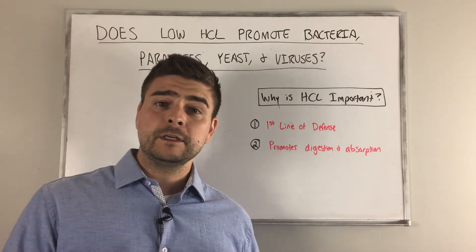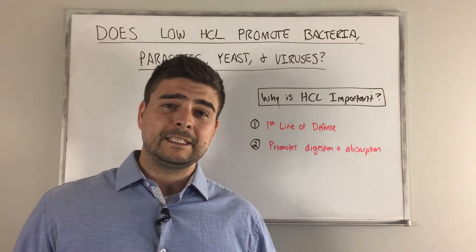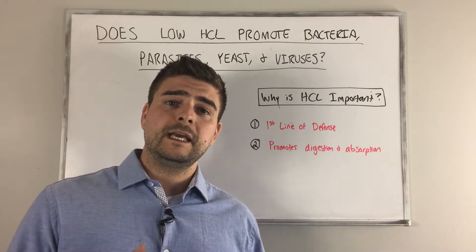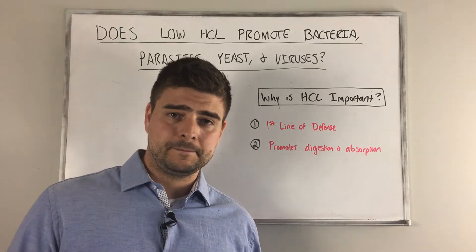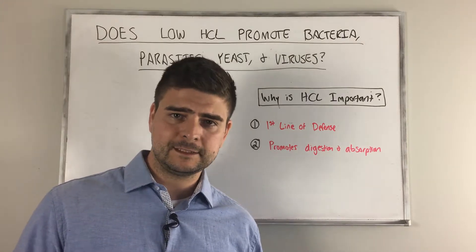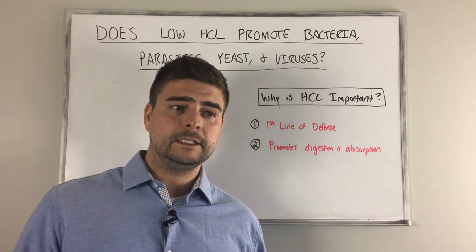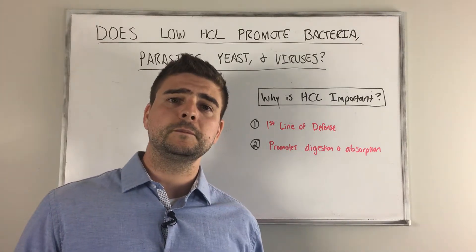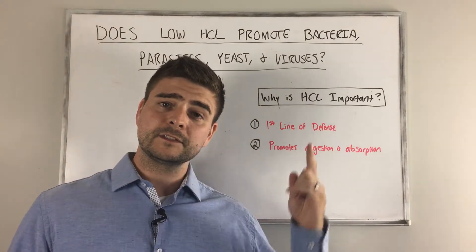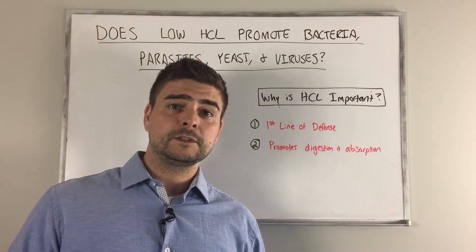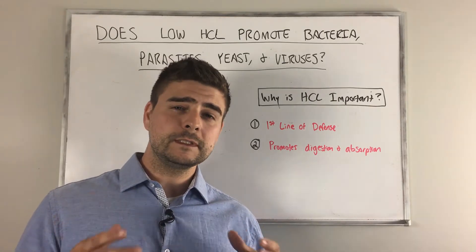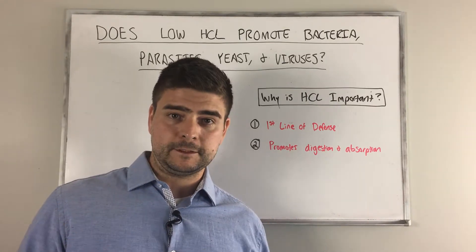Now how does HCL act as that first line of defense? It basically triggers an enzyme in the stomach called pepsin. Pepsin is a protein digestive enzyme and it digests the proteins that you consume. But it just so happens that these bugs are also made of protein, so it starts to break them apart and kills them. So it acts as a really good immune line of defense.